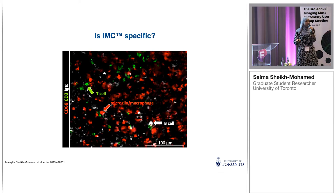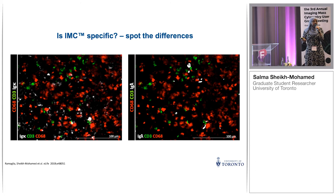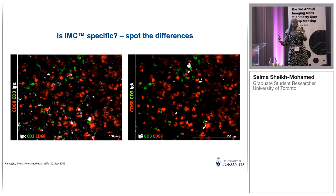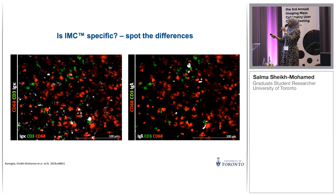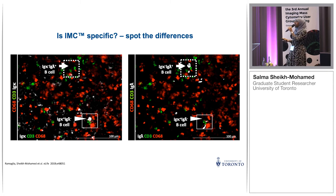The next question was whether our IMC signal is specific. Looking at B cells indicated by IG kappa, microglia or macrophages by CD68, and T cells by CD3 — we know from allelic exclusion that B cells will be either IG kappa positive or IG lambda positive, and shouldn't be double positive. When we turn on just the IG kappa channel, no B cell appears in one square; switching to IG lambda, that B cell pops up. On the opposite end, the IG kappa B cell disappears when IG lambda is turned on. This tells us our staining is specific to the cell types we're interested in.